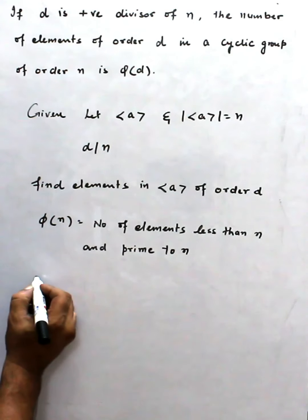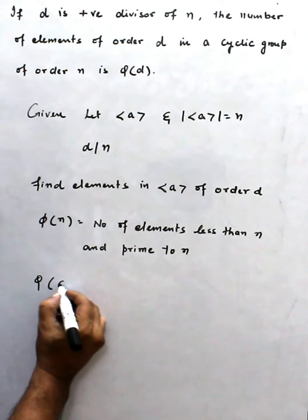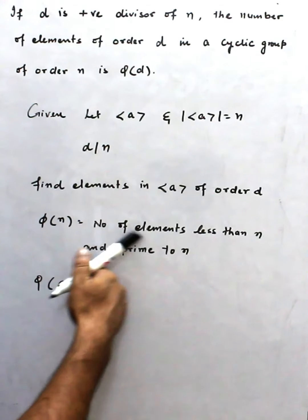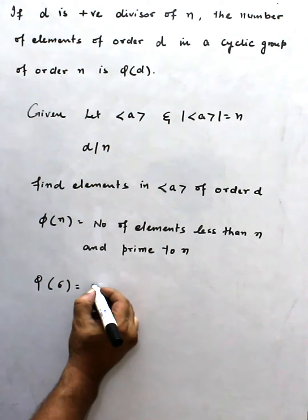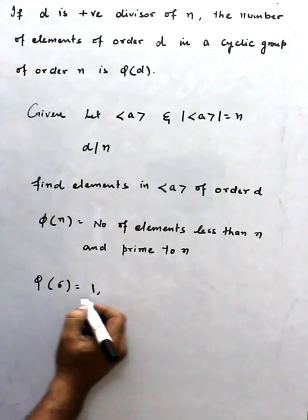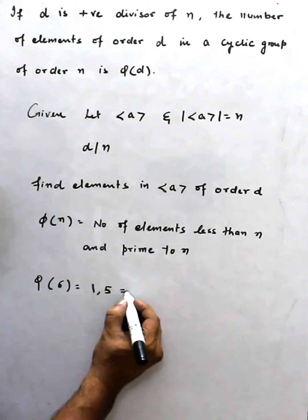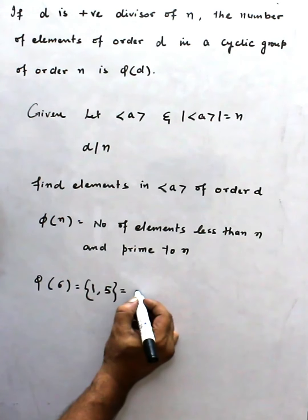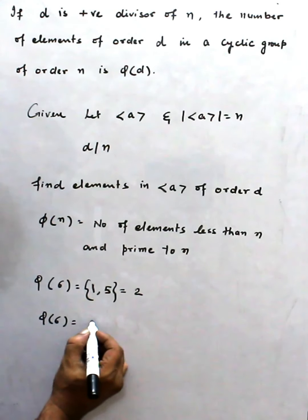If I take n equal to 6, then the numbers which are less than n and prime to it: 1 is prime, 2 is not prime, 3 is not prime, 4 is not prime, 5 is prime. So the set has 2 numbers, meaning φ(6) equals 2.